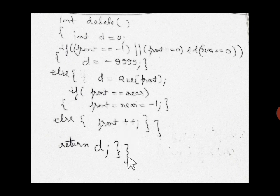If there are no elements, d will contain -9999; if an element was deleted, d holds that value — which is then returned. For the display function, you can refer to my previous Queue program. This is a very important program from the ISC 2017 paper, and you need to be alert when there are changes in the question so you can adjust your code accordingly. Thanks everyone.